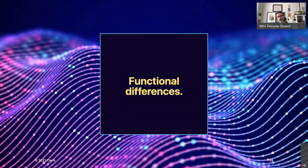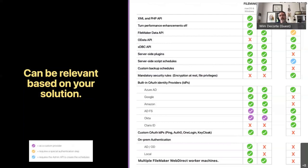We have four deployment choices: three operating systems for FileMaker Server and FileMaker Cloud. There are functional differences to keep in mind that may make the decision for you. We can break them down into two big groups. First: integration — the FileMaker XML API and PHP API are the older APIs and are not supported on Linux. They're not supported on FileMaker Cloud either, since FileMaker Cloud runs on Linux. They are still available in the macOS and Windows versions.